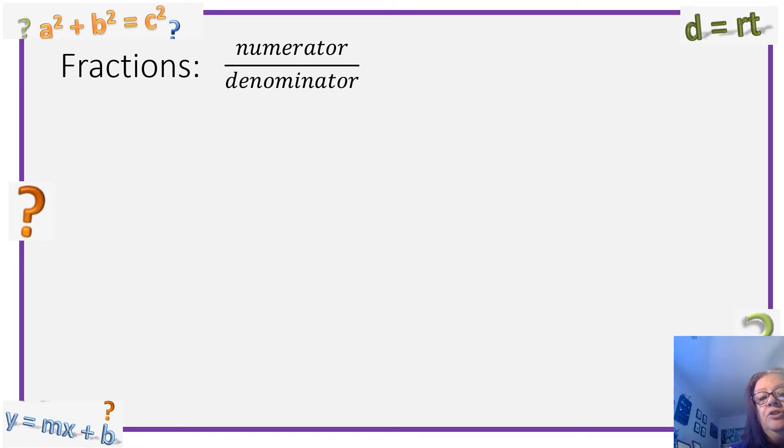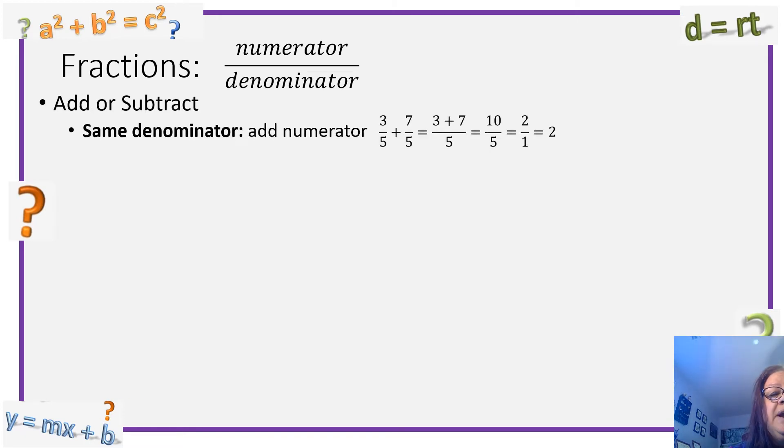Fractions. We have a numerator on top and the denominator on the bottom. To add or subtract fractions, if you have the same denominator, notice here 5 and 5, add your numerator. It's 3 plus 7, over this common denominator. 3 plus 7 is 10. Now we simplify. There are two 5's in a 10, so it becomes 2. My final answer would be 2.